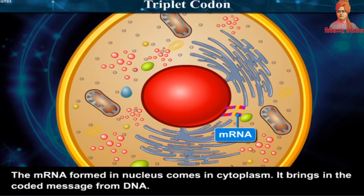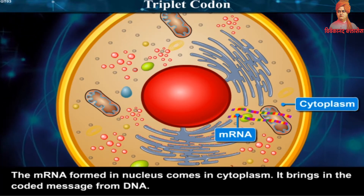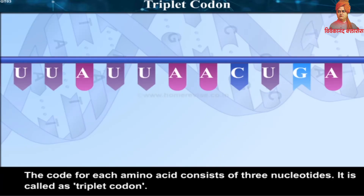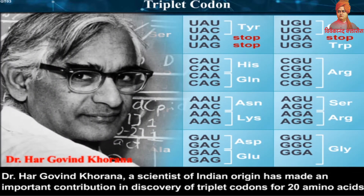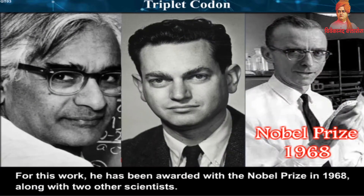The mRNA formed in the nucleus comes into the cytoplasm. It brings in the coded message from DNA containing codes for amino acids. The code for each amino acid consists of three nucleotides — it is called a triplet codon. Dr. Har Govind Khurana, a scientist of Indian origin, made an important contribution in the discovery of triplet codons for 20 amino acids, and was awarded the Nobel Prize in 1968 along with two other scientists.